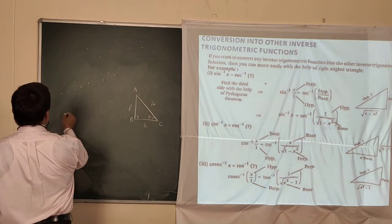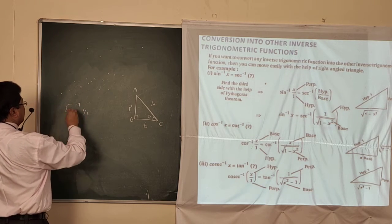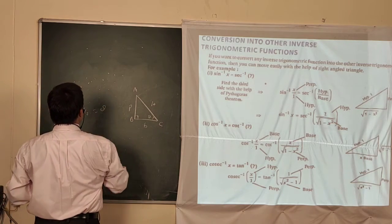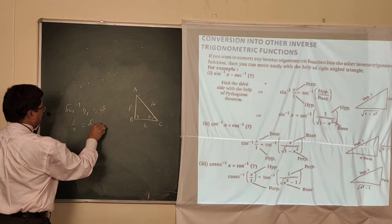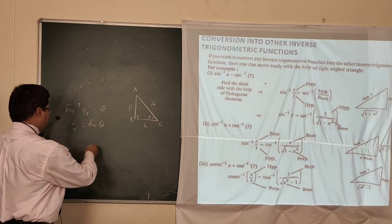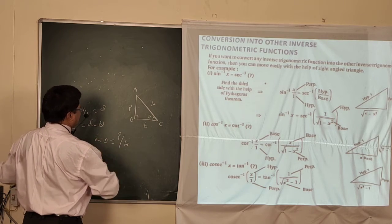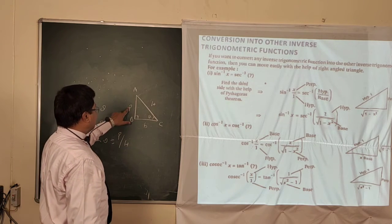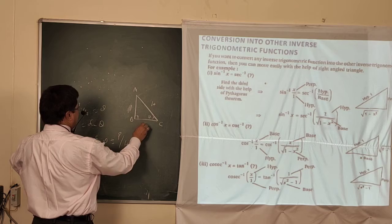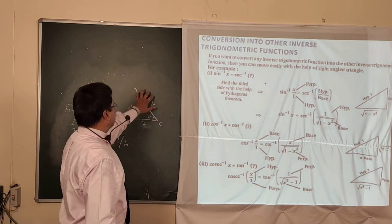Suppose here you want to convert sin⁻¹(1/2). That means 1/2 = sin θ. For this angle θ, this is your perpendicular and this is your base. So the perpendicular is 1 and the hypotenuse side is 2. For this right-angle triangle, you know how to find the hypotenuse using the Pythagoras theorem: H² = P² + B².